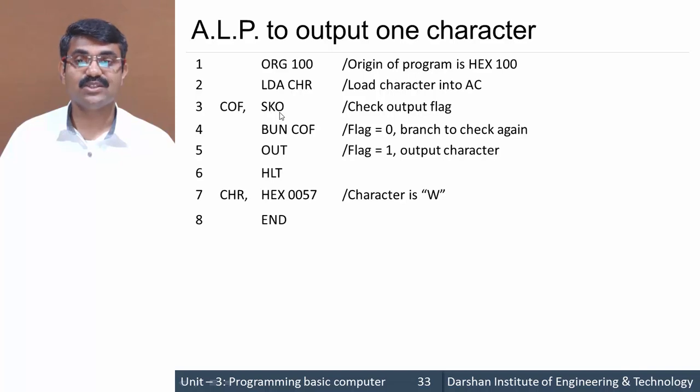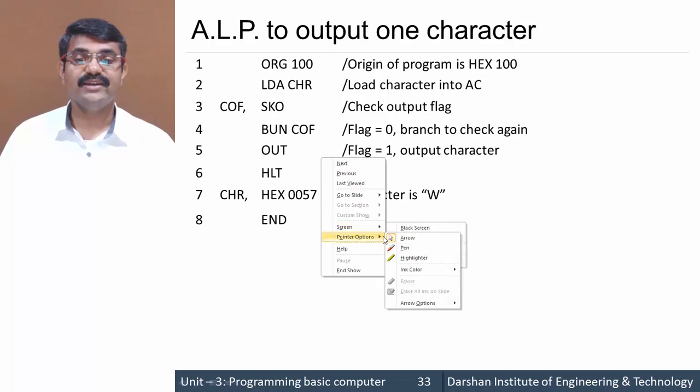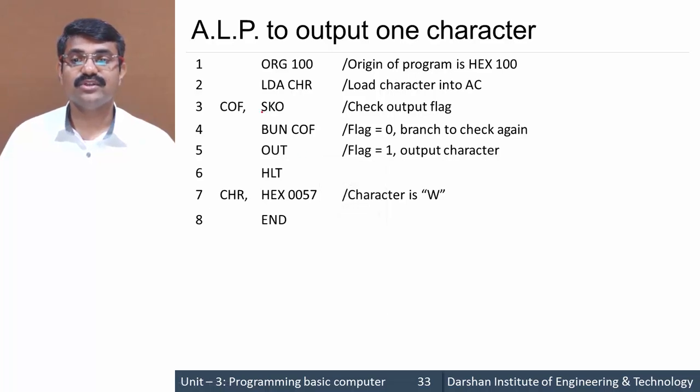If output flag is 1, then skip the next instruction and we would be skipping it to directly OUT, so it will output the character.